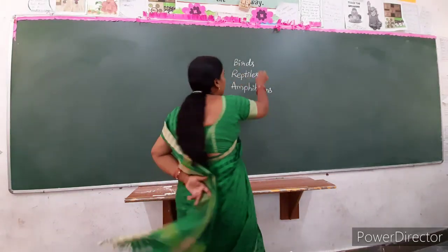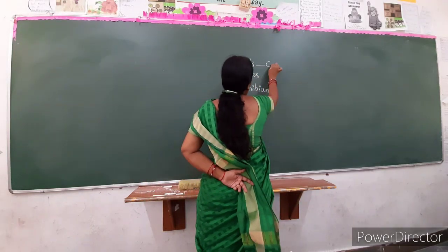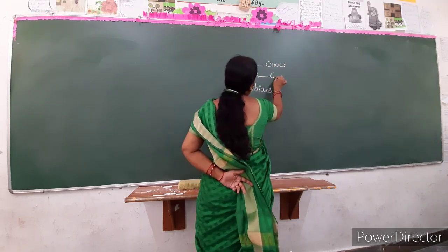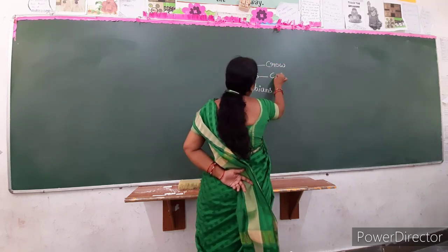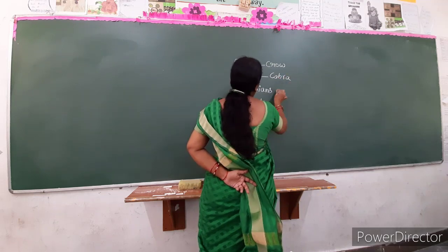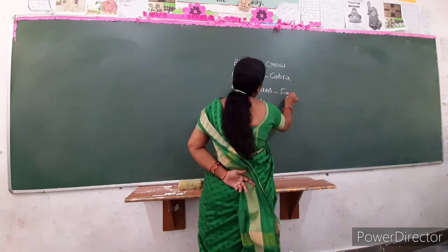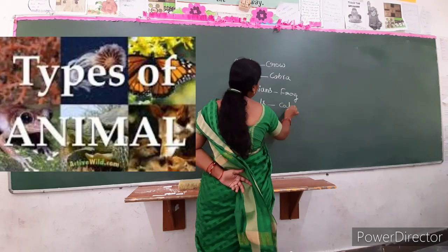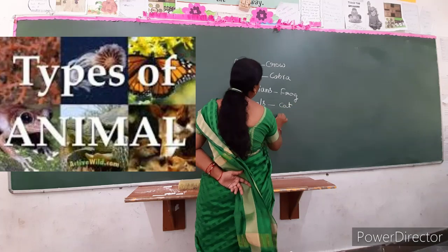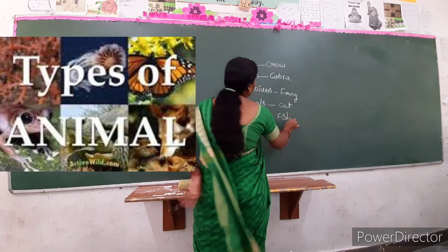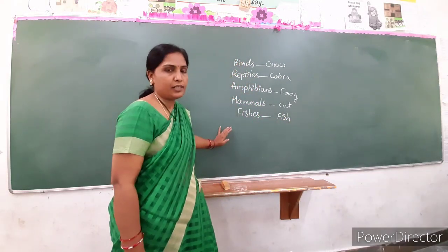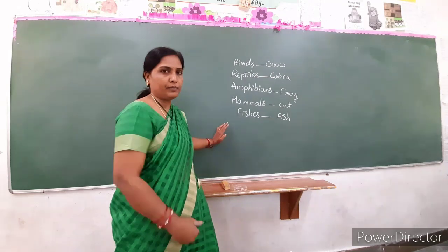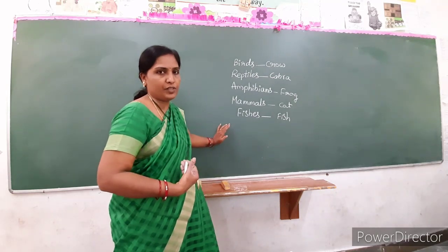So this all you learned yesterday. One example we will write: any bird - crow, any reptile - cobra, any amphibian - frog, any mammal - cat, fish. So these all animals, you learned how to sort out them by observing physical features.